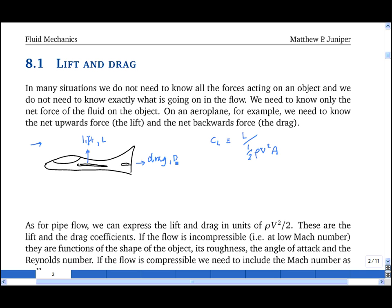And if the drag is given the symbol D, then the natural non-dimensional number is the drag coefficient, defined as D divided by a half rho v squared times the area.